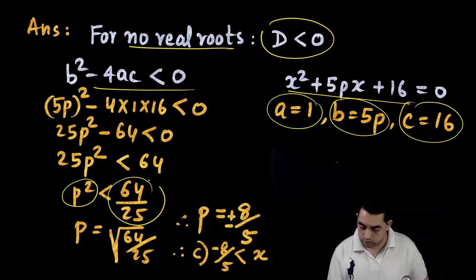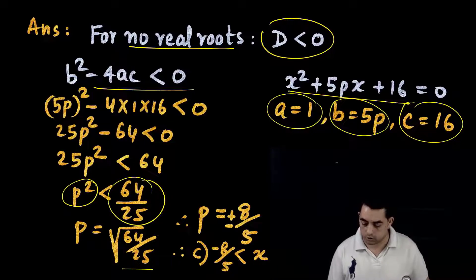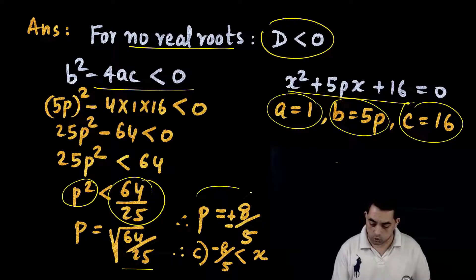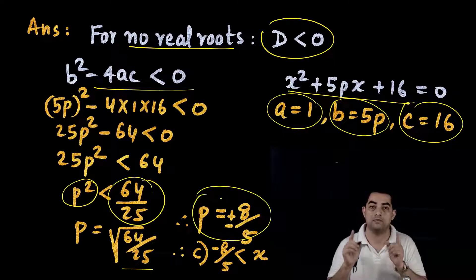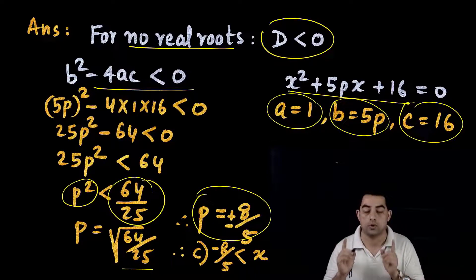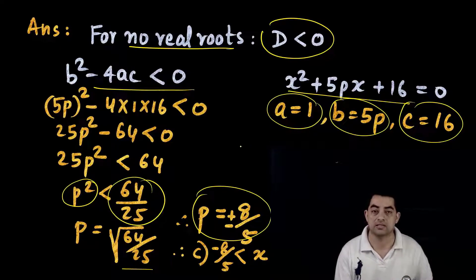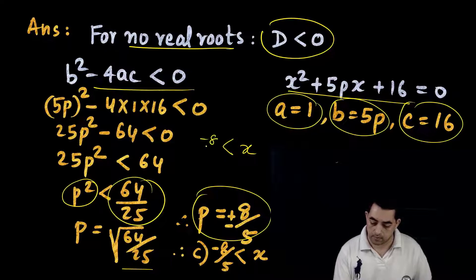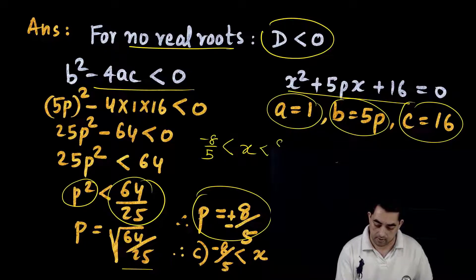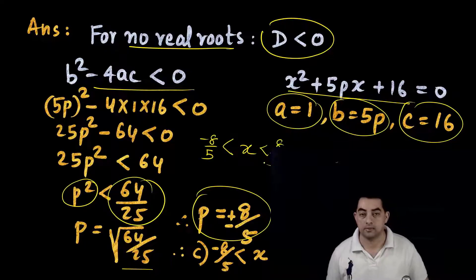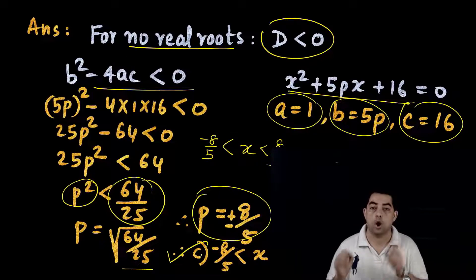From the equation: a = 1, b = 5p, c = 16. Substituting into b² - 4ac < 0 and solving, we get p² = 64/25. Taking the square root: p = ±8/5. This means p must be between -8/5 and 8/5, which is option C.